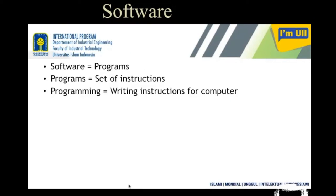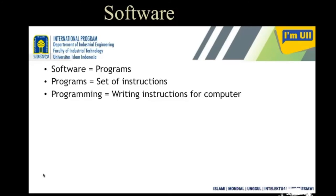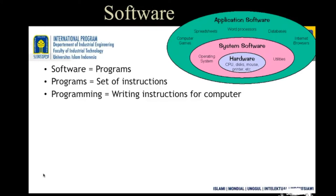Software is equal to a program, as I said earlier, and a program is a set of instructions which you have to give to the computer to perform some job. Those instructions you have to write in a computer, and that writing process is called programming. So programming is a procedure to give or to write instructions to the computer.